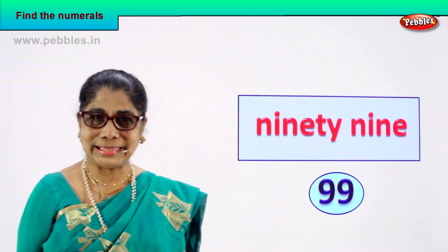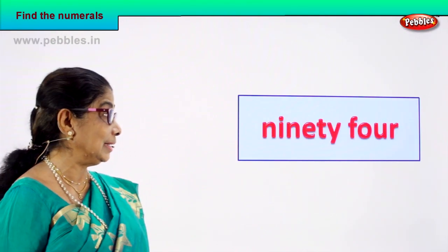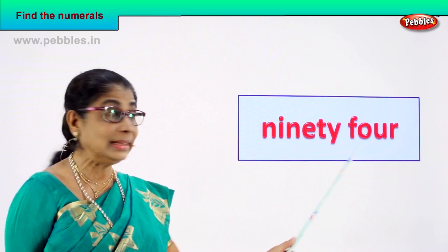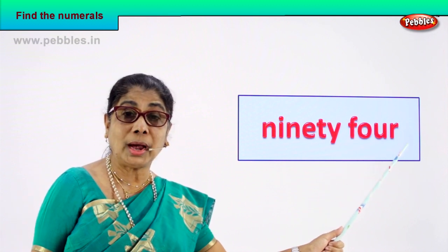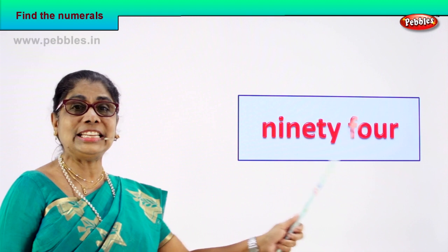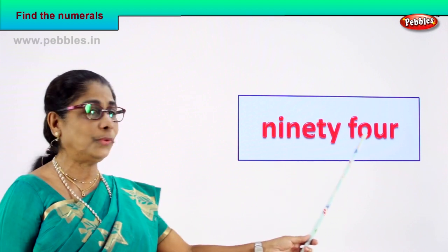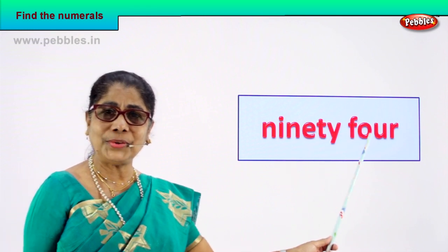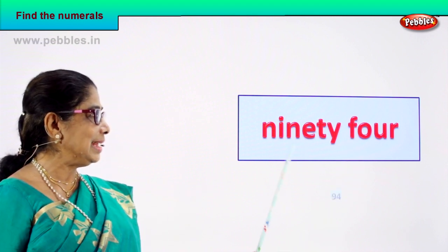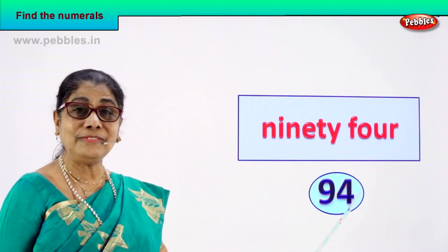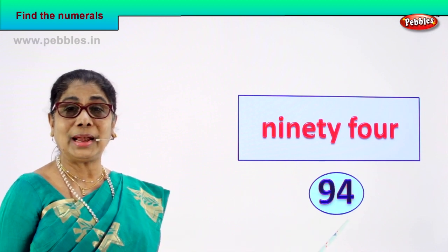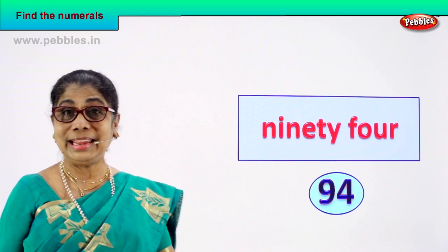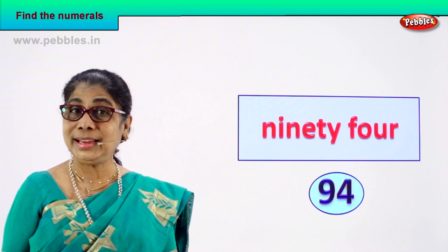Shall we go to another number name? I hope you are enjoying the exercise. N-I-N-E-T-Y is ninety, F-O-U-R is four — 94. You are able to read 94. How do we write the numeral for 94? 9 and 4 — 94. Excellent! 94 is 9 and 4. Very good, are you enjoying?